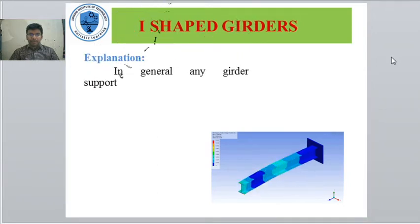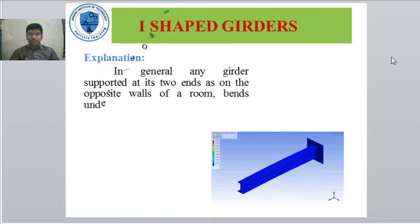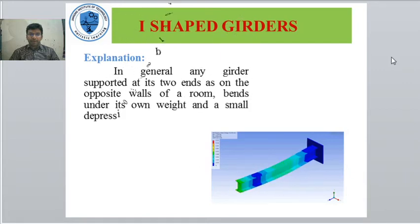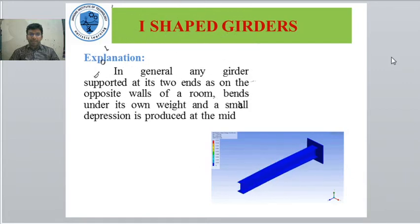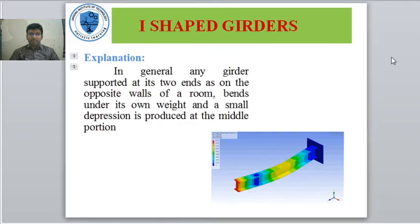In general, any girder supported at its two ends — as on the opposite walls of a room — bends under its own weight, and a small depression is produced at the middle portion.